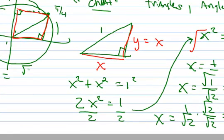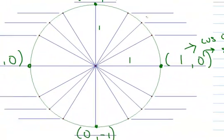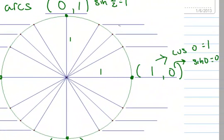So x = √2/2. Because x is the cosine, the cosine of π/4 is √2/2. And the sine is the same thing, because both legs of the triangle were equal. So the sine of π/4 is also √2/2.